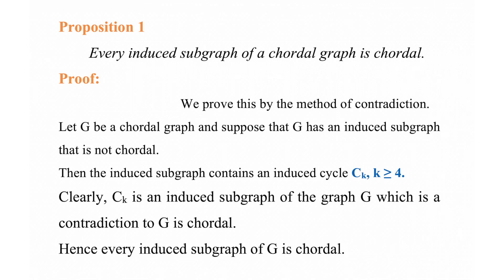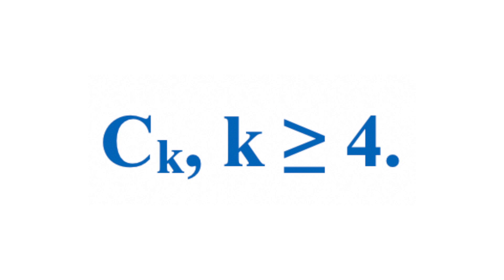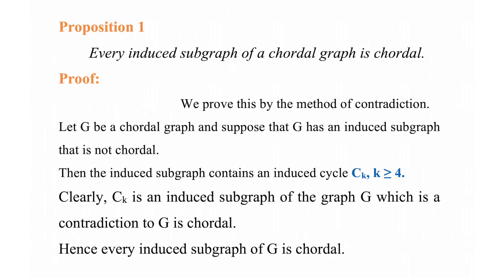Next, let us see the following proposition, which tells about the induced subgraph of a chordal graph. Proposition 1: every induced subgraph of a chordal graph is chordal. We prove this by contradiction. Let G be a chordal graph and suppose G has an induced subgraph that is not chordal. Then the induced subgraph contains an induced cycle Ck where k ≥ 4. Clearly Ck is an induced subgraph of G, which is a contradiction to G being chordal. Hence every induced subgraph of G is chordal.